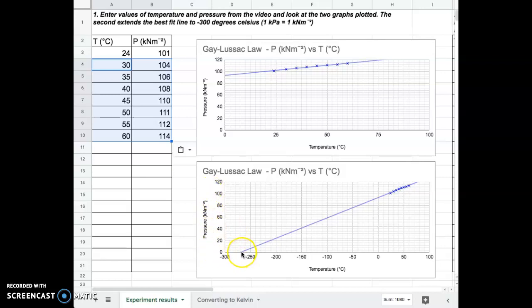At this point, all the molecules stop moving, and you can't get any colder than this minus 270. The actual value is minus 273, but for this we'll just use minus 270 for the results that we've got here.